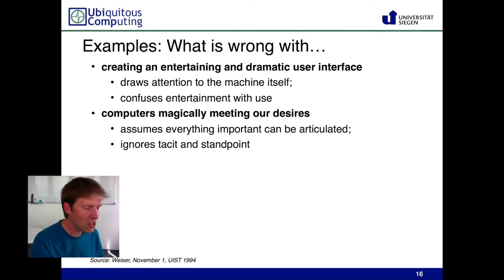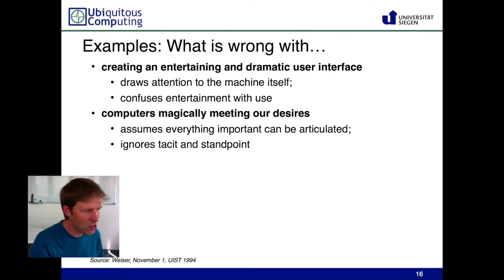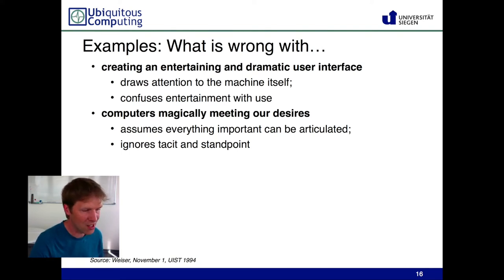He also spoke against computers magically meeting our desires. In the 90s there was a big drive toward user agents — programs that tried to interact with a person as if they were a person helping you. Weiser was against this because it assumes computers can understand everything a user would want and that what the user wants could be articulated. This is extremely hard for most computers. The tacit knowledge — things that are really hard to describe, the context in which a user gives a command — is very hard for computers to grasp, in the 90s just as now.